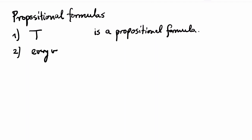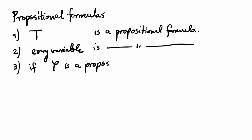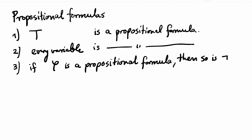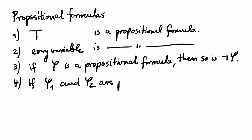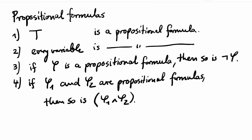Now suppose that PHI is a propositional formula. Then NOT PHI is also a propositional formula. PHI is just a sequence of symbols, and NOT PHI is the string that we get by prepending the negation symbol. Finally, if PHI1 is a propositional formula and PHI2 is a propositional formula, then opening bracket PHI1 AND PHI2 closing bracket is a propositional formula.